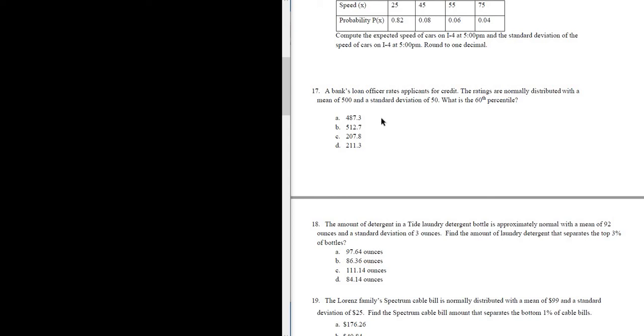Let's do problem number 17. A bank's loan officer rates applicants for credit. The ratings are normally distributed with a mean of 500, so that's going to be our mu. So mu is 500. And a standard deviation of 50, so sigma is 50.